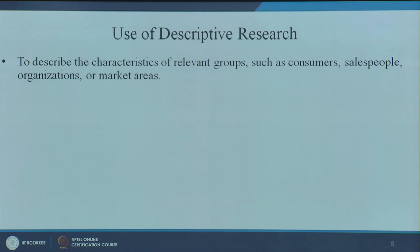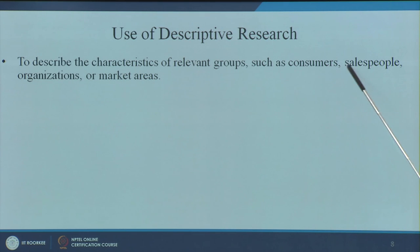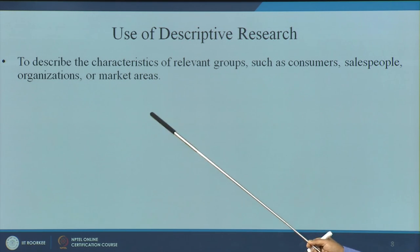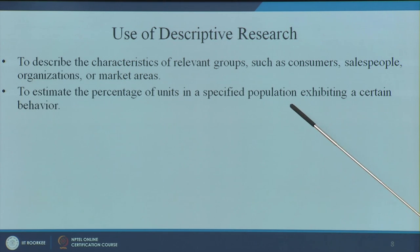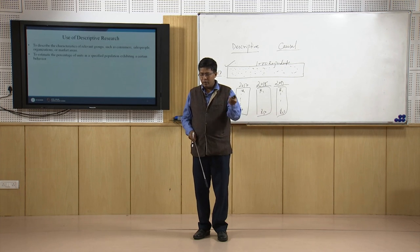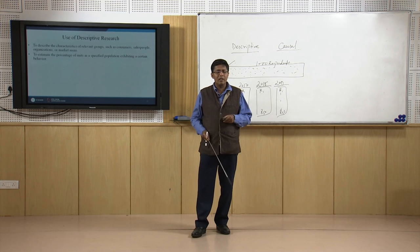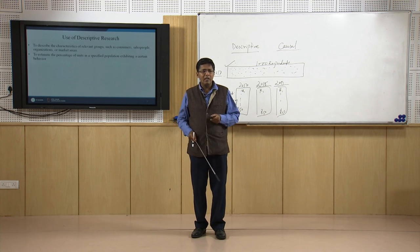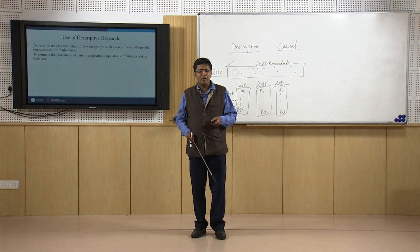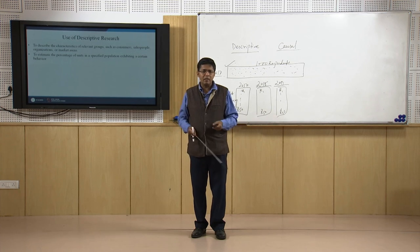Uses of descriptive research include: understanding the characteristics of relevant groups such as consumers, salespeople, organizations, or market areas; and estimating the percentage of units in a specified population exhibiting a certain behavior — for example, who are the buyers of Harley-Davidson.